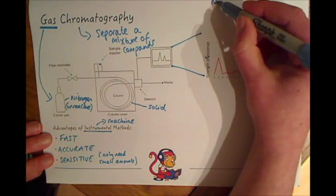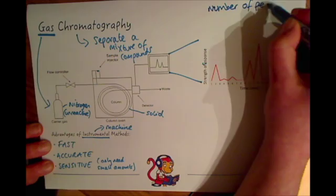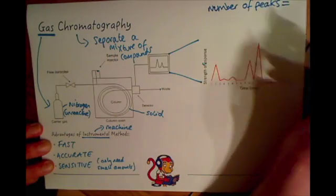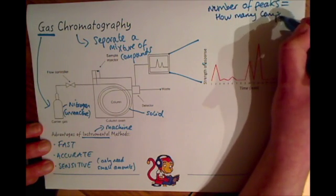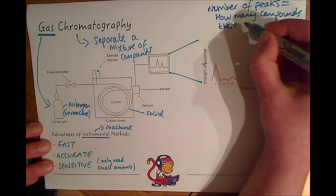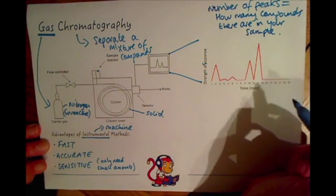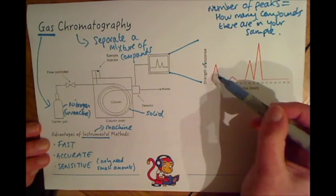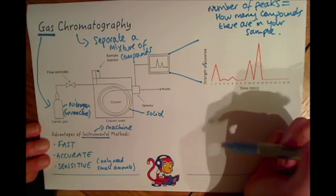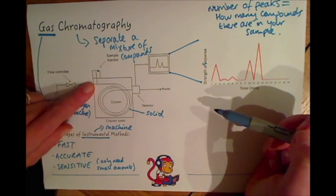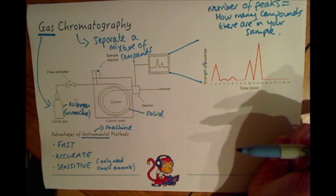The number of peaks tells you how many compounds there are in your sample. In our example here, we've got five peaks, so there are five different compounds in the sample put into the gas chromatography machine. That's one thing you need to be able to read from these graphs: the number of peaks tells you how many different compounds there are in your sample.